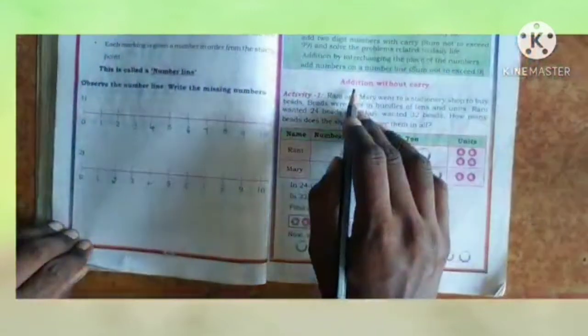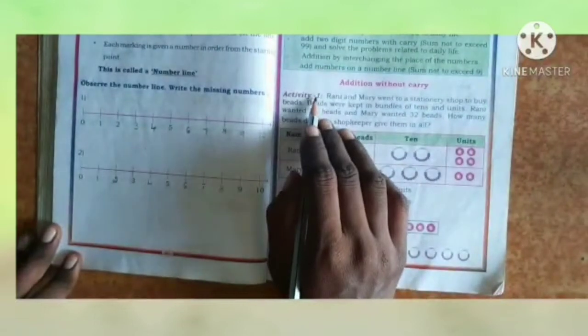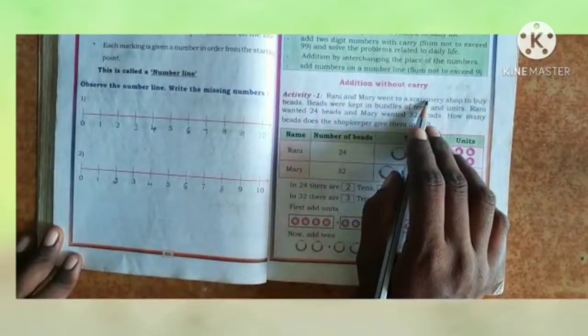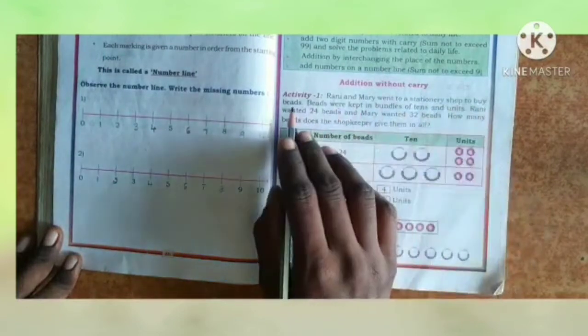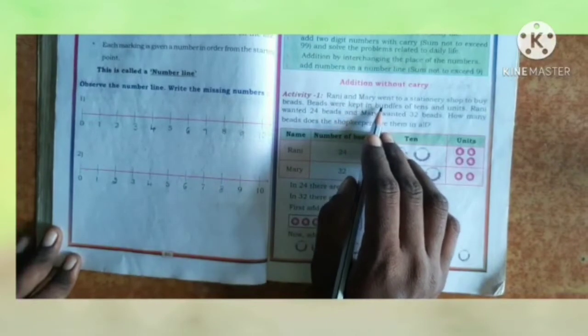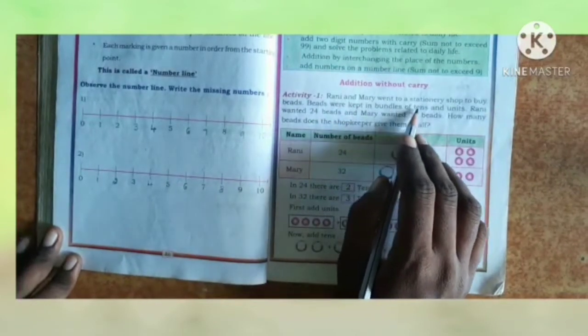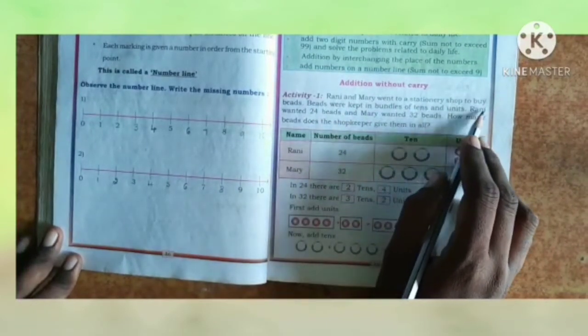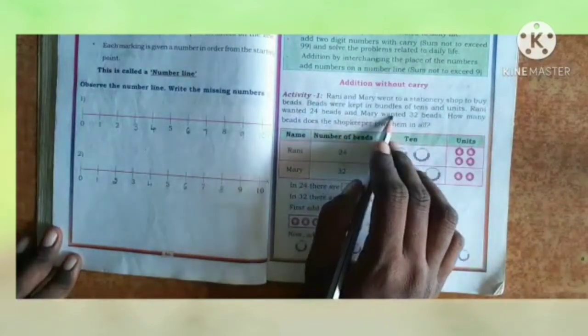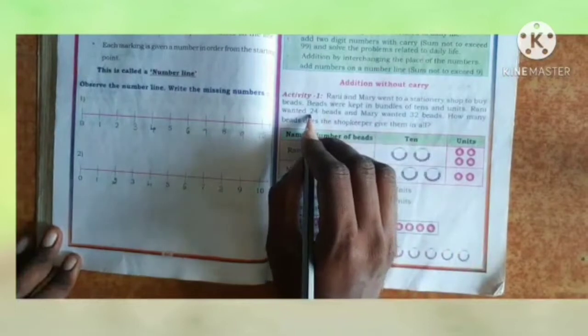Next, addition without carry. First one, activity 1. Rani and Mary went to a stationary shop to buy beads. Beads were kept in bundles of tens and units. Rani wanted 24 beads and Mary wanted 32 beads. How many beads does the shopkeeper give them in all?